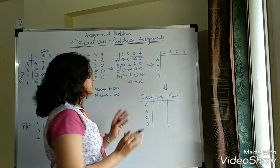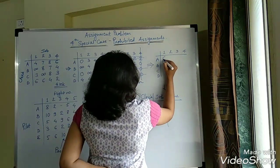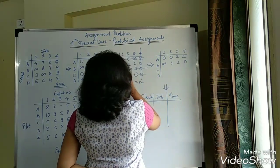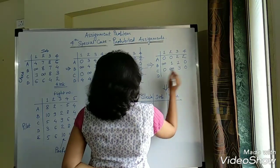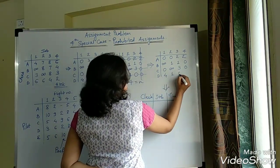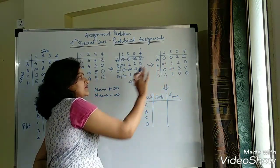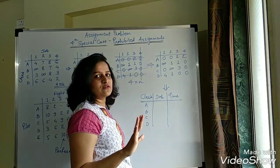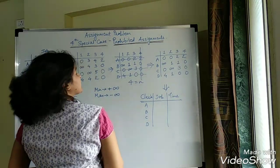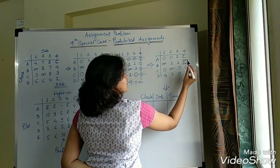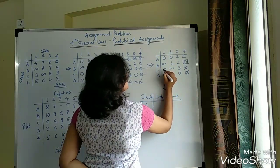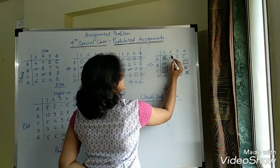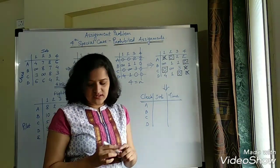Now let's make allocations by copying the reduced matrix: Row 1 — 0, 0, 2, 2; Row 2 — infinity, 1, 1, 0; Row 3 — 0, infinity, 3, 0; Row 4 — 4, 1, 0, 0. Going row-wise and finding single zeros: Row 2 has only one zero — allocate there. Row 3 now has one zero — allocate there. Row D has one zero — allocate. Finally Row A has one remaining zero — allocate there.